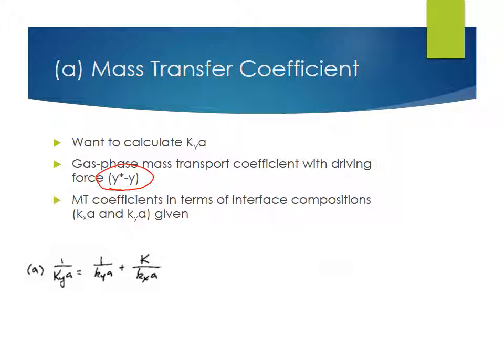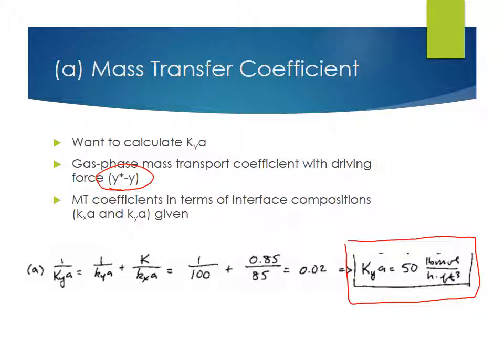And if you look at the problem statement, we have all those numbers. So it's actually straightforward to calculate this number. So lowercase KYA is 100, lowercase KXA is 85, and capital K is 0.85. So 1 over capital KYA is 0.02. And we can then calculate capital KYA, the mass transfer coefficient of interest, is 50 pound moles per hour per cubic foot. And the units are just the same as the lowercase KXA and KYA. So that's our mass transfer coefficient. That's the first part.